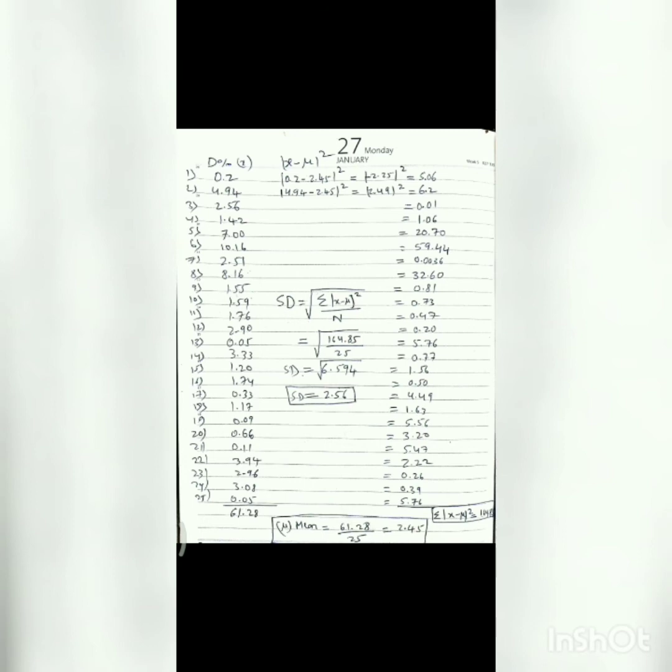X is 0.2 and minus mean. Mean is the same for all 25 leaves. Calculate the whole square and I got 5.06. You need to calculate the same for 25 leaves and take the summation of (X minus mean) whole square.